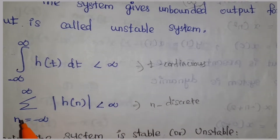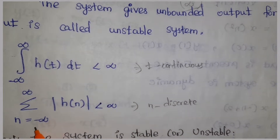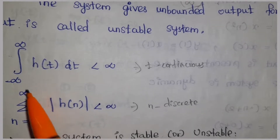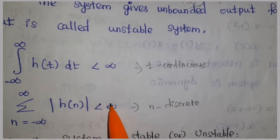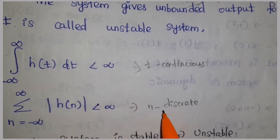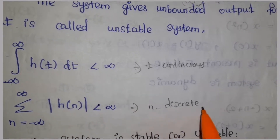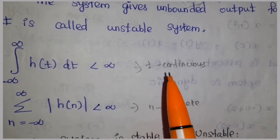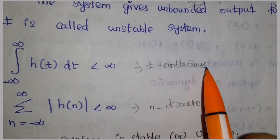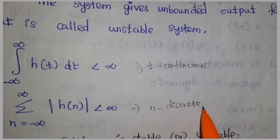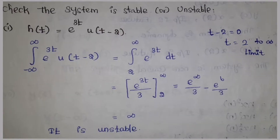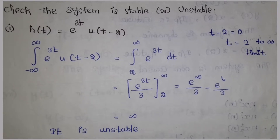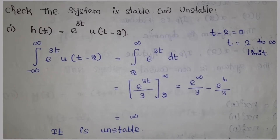For a continuous system we use the integral condition. For a discrete system, the stability condition is the summation from n equals minus infinity to infinity of |h(n)|. If this summation is finite, the system is stable.